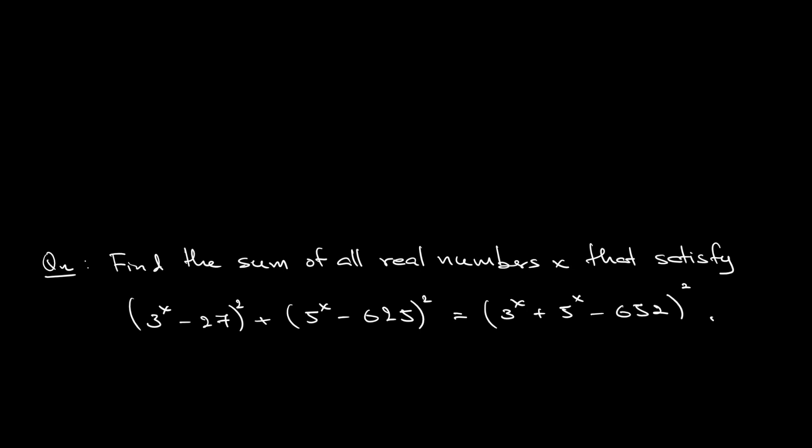One thing to notice about this is if you let a = 3^x - 27 and b = 5^x - 625. Notice that the expression in the third bracket is in fact a + b, so that means the equation becomes: